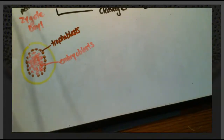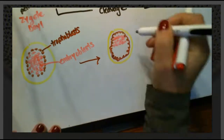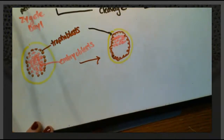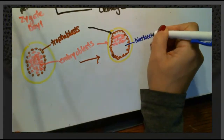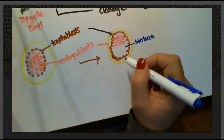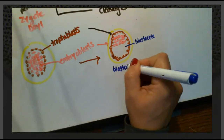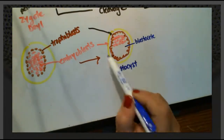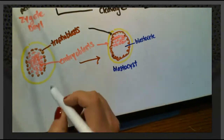Moving on to the next stage: the inner mass cells clump even more and cluster at one end, leaving a small cavity on the other end. We still have our trophoblast and embryoblast, but now we also have this cavity called the blastocele, which is filled with fluid. Because this structure now looks different from what came before, we give it a new name: the blastocyst.